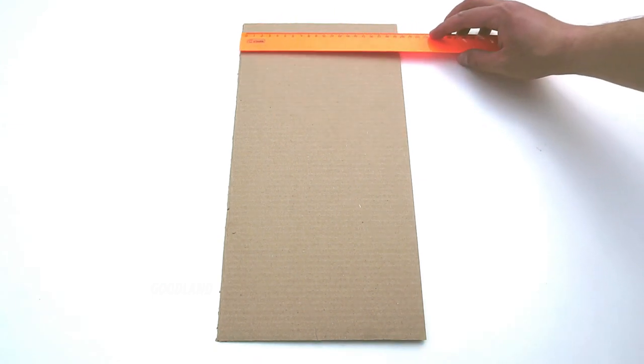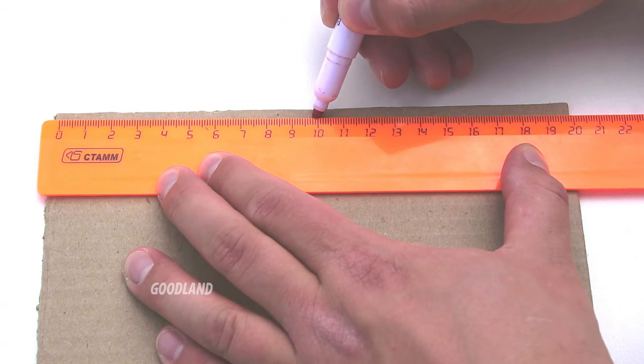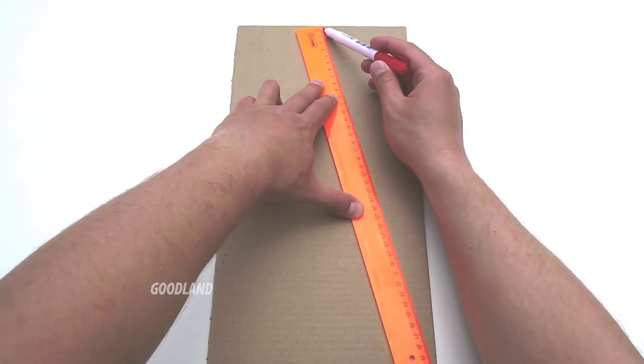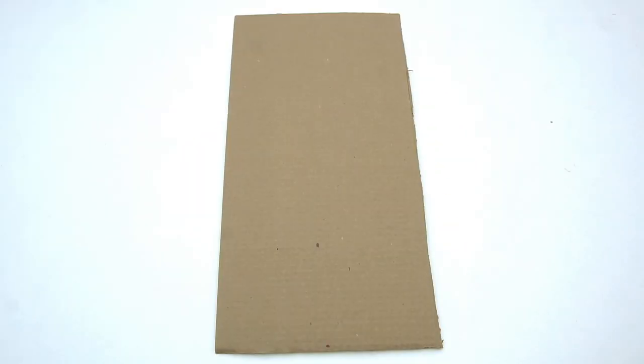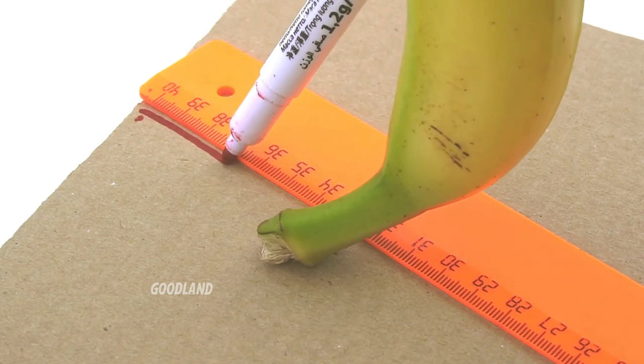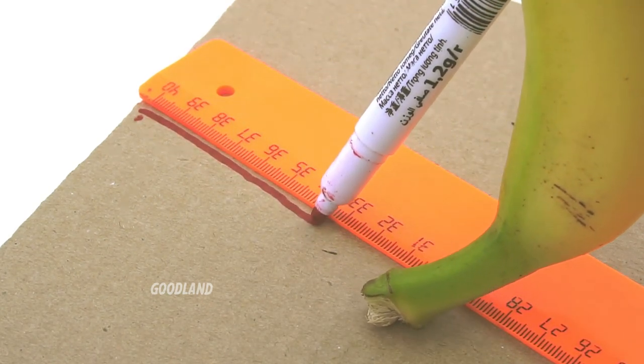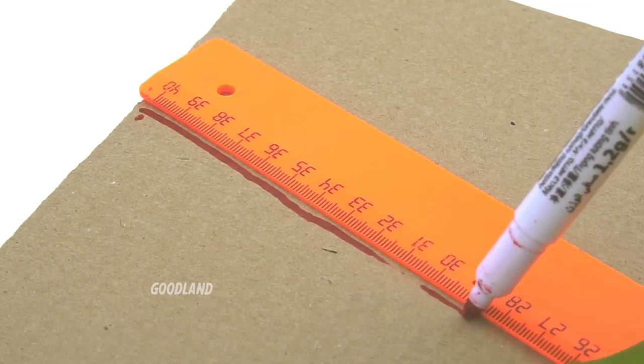Take a ruler and measure 10 cm. After that we draw a line. Hey! Help me! Here is a ruler and marker for you. No problem! What's so hard about that?